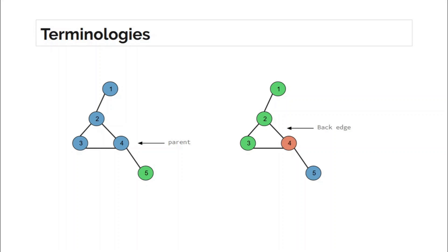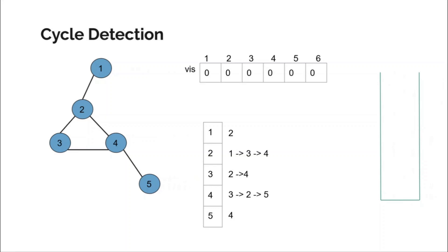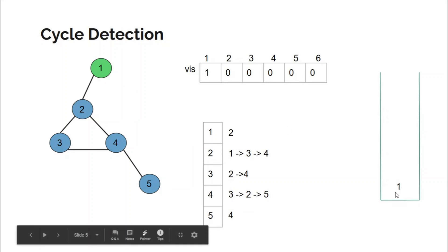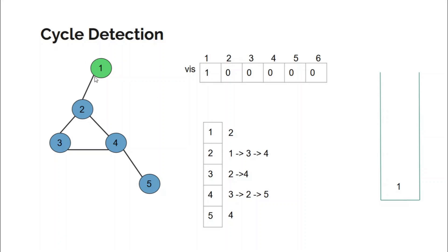Let's take an example to make things clearer. This is the graph, the visited array to indicate which node has been visited, the adjacency list, and the stack. From the main function we made a DFS call to node one, so DFS(1) is on the stack. We pass the parent of node one as minus one, since node one is the root and has no parent.